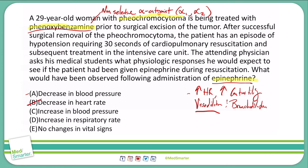Does it increase blood pressure? No, because we are vasodilating. Does it increase our respiratory rate? No — we are actually bronchodilating. We are able to get more air in with our beta-2 effects. So D is not the correct answer. And no changes in vital signs is definitely not the correct answer because we are having those unopposed beta-1 effects. So we are left with A as our only option, and a decrease in blood pressure would be the final answer.